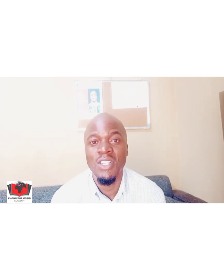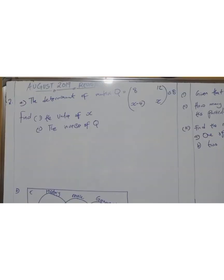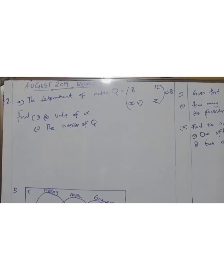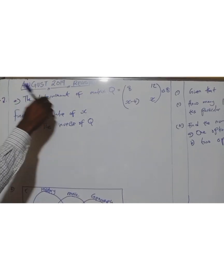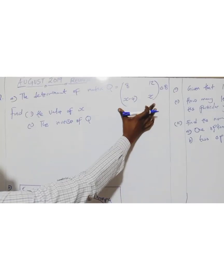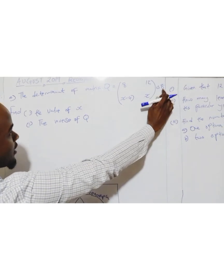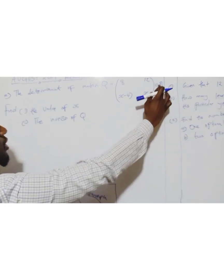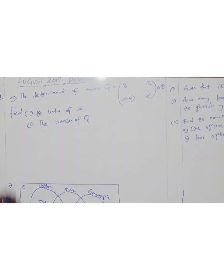Enjoy the video. See you in the group. We're looking at question two now. The determinant of matrix Q is given. The determinant of this matrix is 8. This is the matrix — the determinant is 8. You have been told to find the value of x.